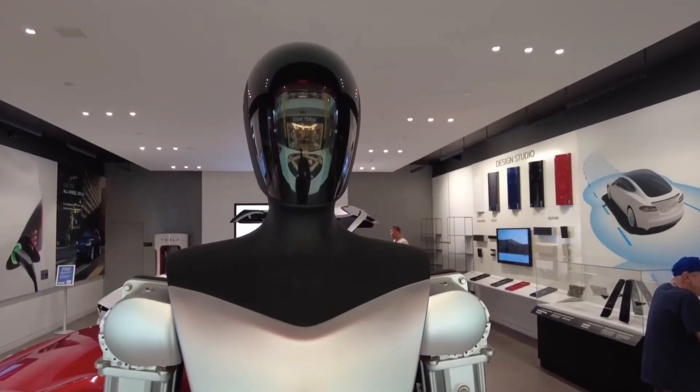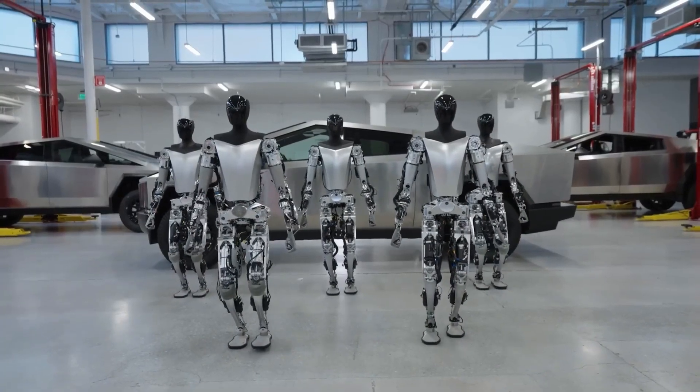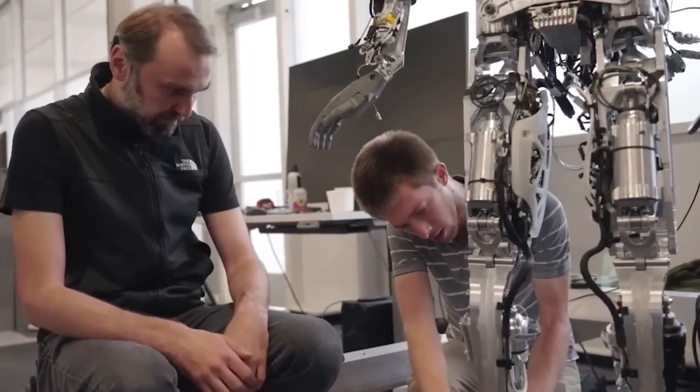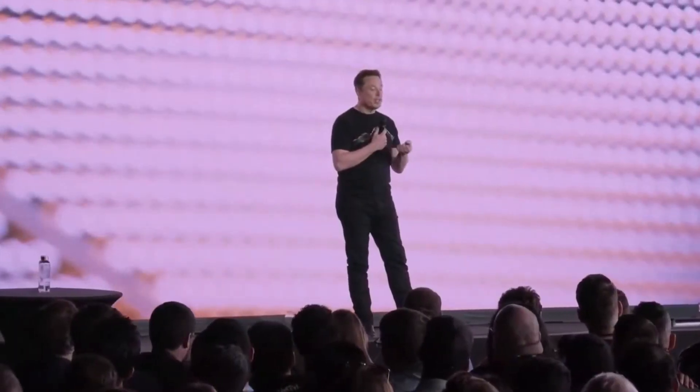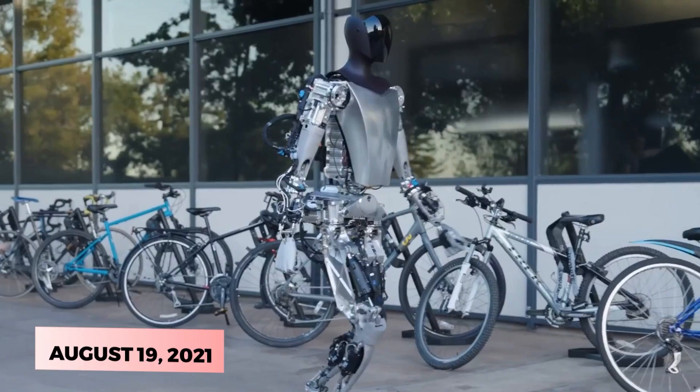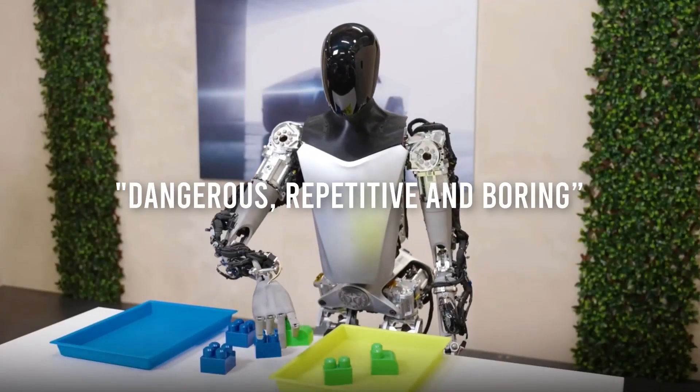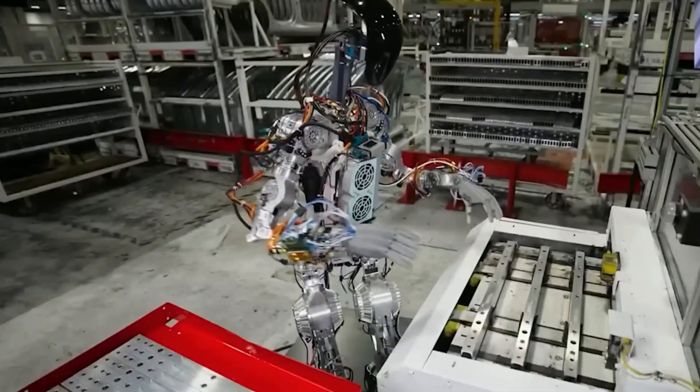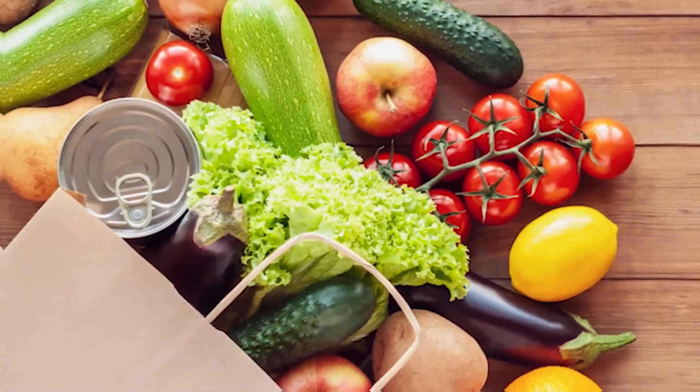Tesla Bot Optimus is a conceptual general-purpose robotic humanoid that Tesla Inc. is developing. It was announced at the company's Artificial Intelligence Day event on August 19, 2021. The robot is designed to perform tasks that are dangerous, repetitive, and boring for humans, such as assembling car parts, moving components around factories, and picking up groceries.